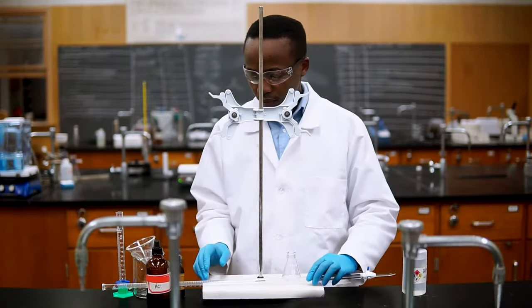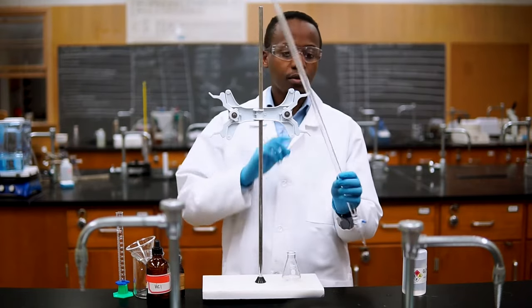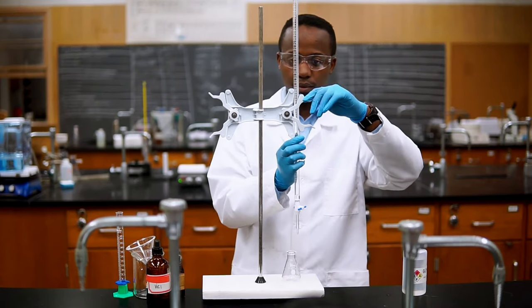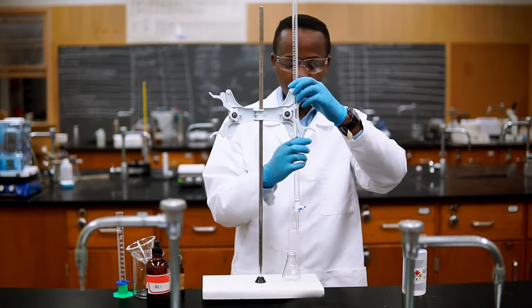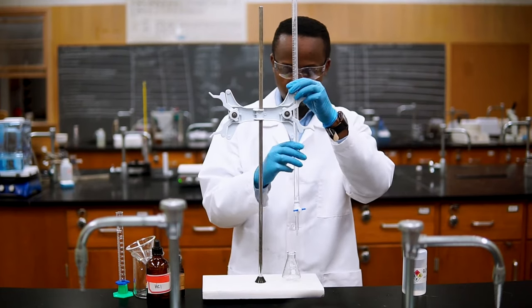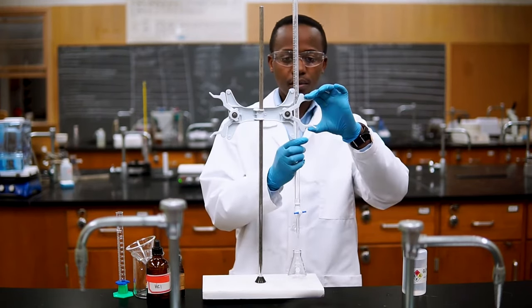First let's assemble our titration setup. We'll add our clean burette to the ringstand and clamp. This is where we'll add our base, which again is referred to as the titrant in this case. Our acid will go in an Erlenmeyer flask below the burette. This is our analyte.